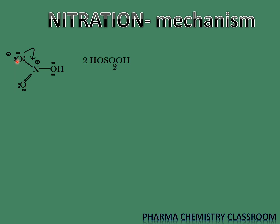Nitric acid has three oxygens attached to it: one oxygen with three lone pairs and a negative charge, another oxygen with two lone pairs, and the third oxygen attached to a proton as an OH group. In the first step, protonation of nitric acid takes place — the OH group of nitric acid abstracts a proton from sulfuric acid, forming OH2+, which is a very good leaving group. It leaves as a water molecule, and we get a hydrogen sulfate ion along with our desired nitronium ion, which is the electrophile.